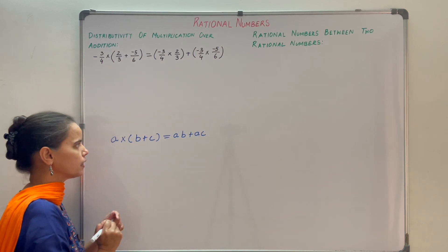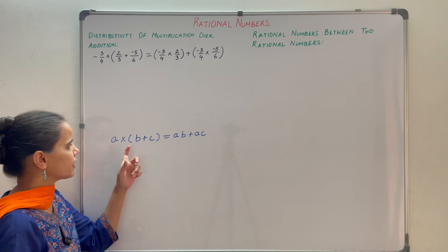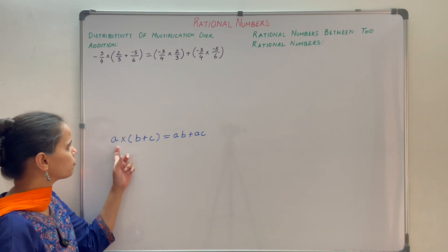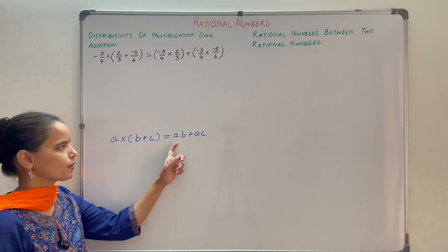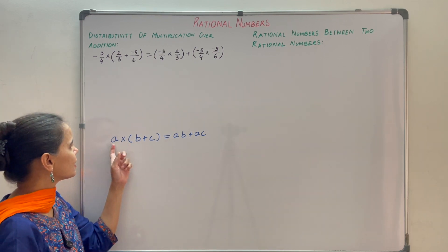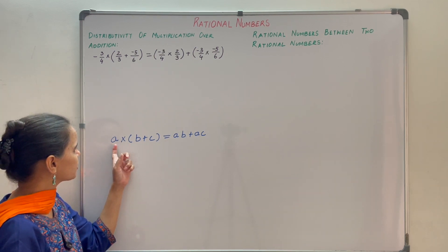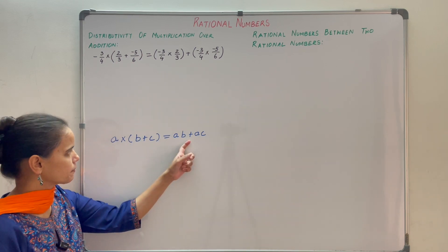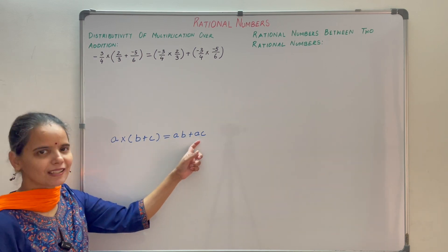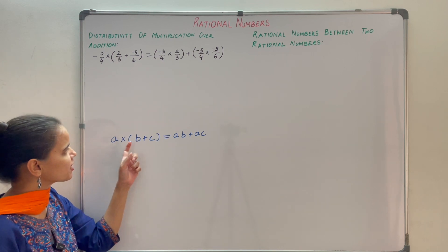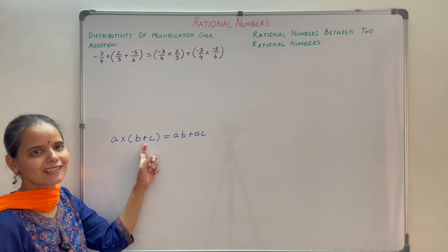Here, first you will multiply a to b. Both are positive, so the result will be positive and a into b is a·b. Now you will multiply a to c — plus into plus is plus, so a into c is a·c. This is the distributive property of multiplication over addition.